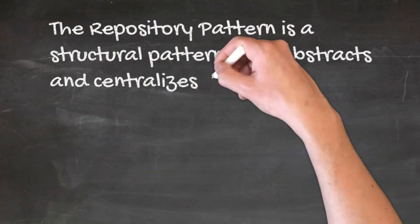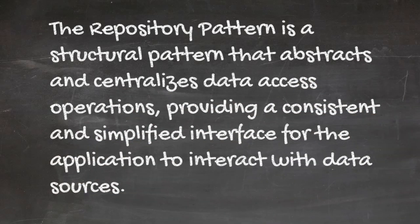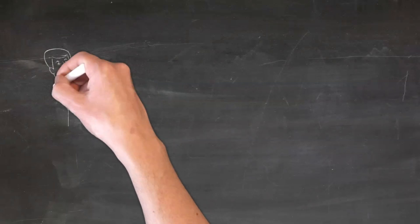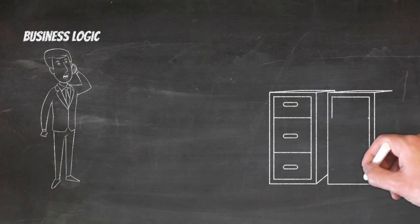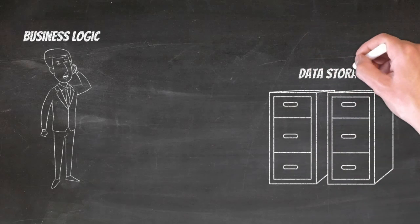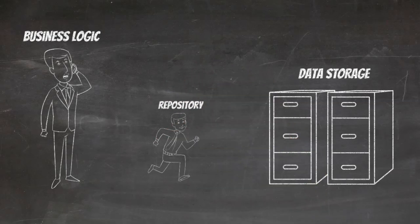The repository pattern is a structural pattern that abstracts and centralizes data access operations, providing a consistent and simplified interface for the application to interact with our data sources. In essence, the repository pattern acts as a mediator or a middleman between the application's business logic and the data storage, shielding the rest of the code from the details of how data is fetched, stored, or manipulated. It encapsulates the data access logic, which can include querying databases, making API calls, or working with any other data source into a set of defined methods and operations.